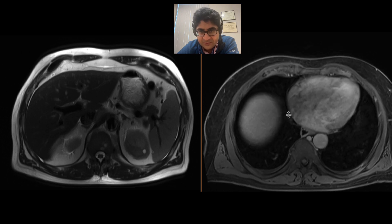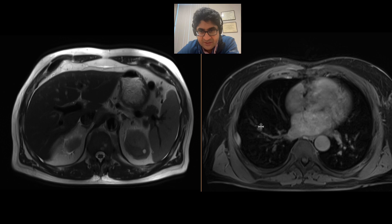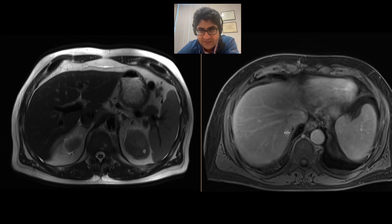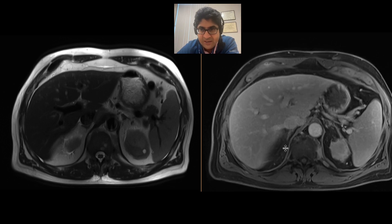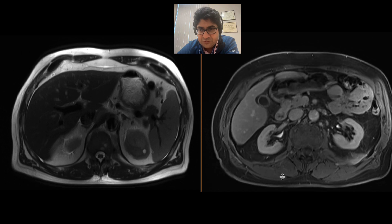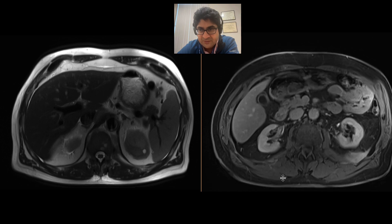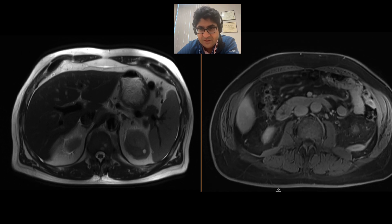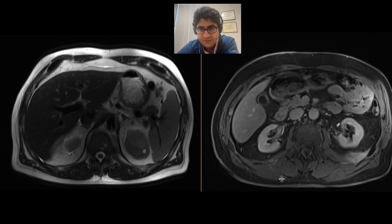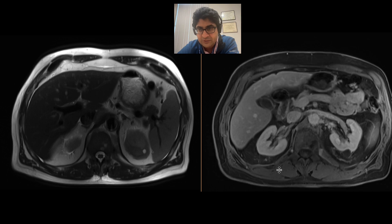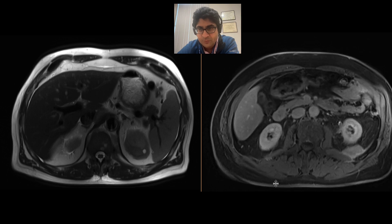There's also this incompletely imaged mass in the intercostal region, and that's enhancing as well. Putting this together — the soft tissue perinephric mass, additional soft tissue in the retroperitoneum, lymphadenopathy, and other findings elsewhere — this is a great look for lymphoma.